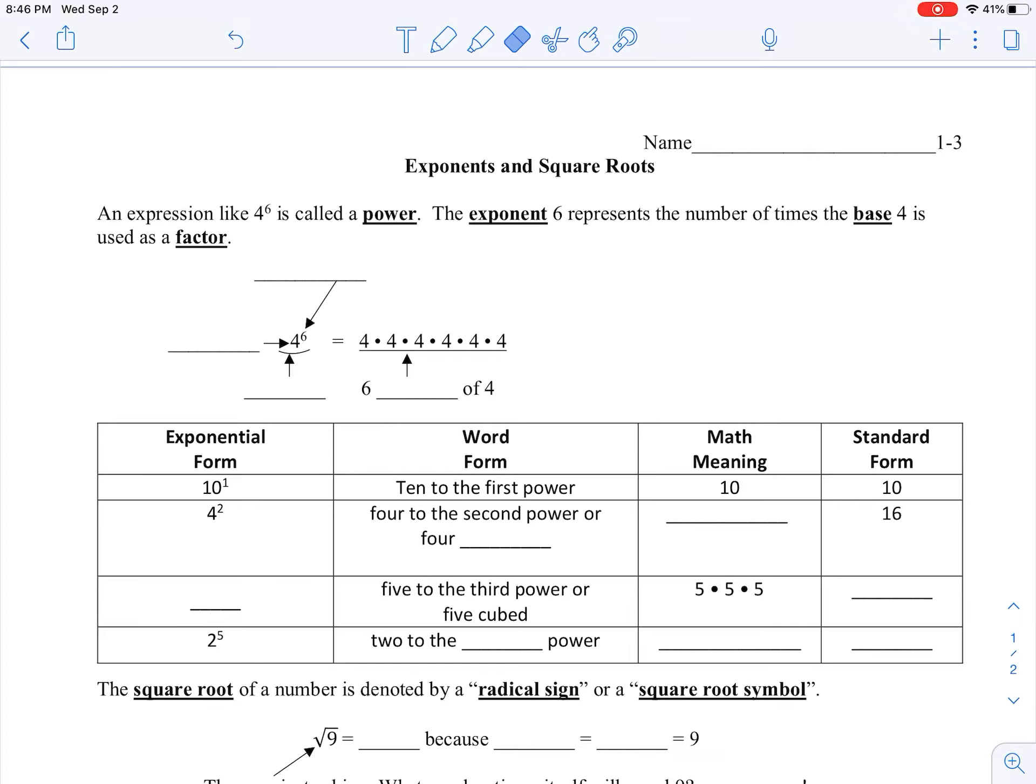An expression like 4 to the 6th here is called a power. So this whole number that we're talking about here, we're calling a power. It is a number in power form. So our exponent of 6, so we're going to call this 6 up here, the exponent, represents the number of times that we take our base.